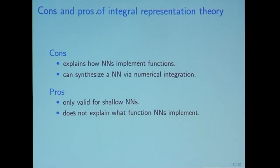But there is concern of integral representation theory because this is a theory for shallow structure. We cannot use this theory for deep neural networks. Also, this theory just says that the neural network can approximate L1 or L2, or continuous function on compact sets, and they don't say anything about what they approximate.